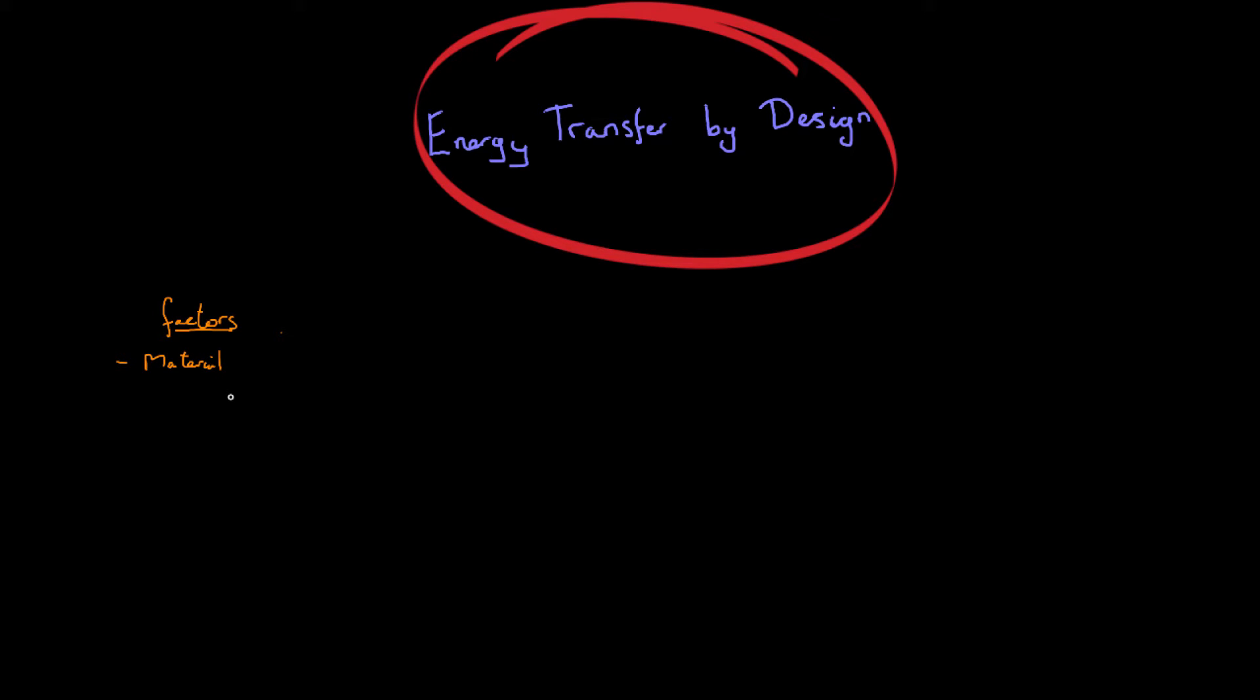So for example, you know that metal is a great conductor of heat, whereas something like cotton wool is not. That is more of an insulator. Polystyrene, that's more of an insulator. So the material is going to affect that energy transfer.